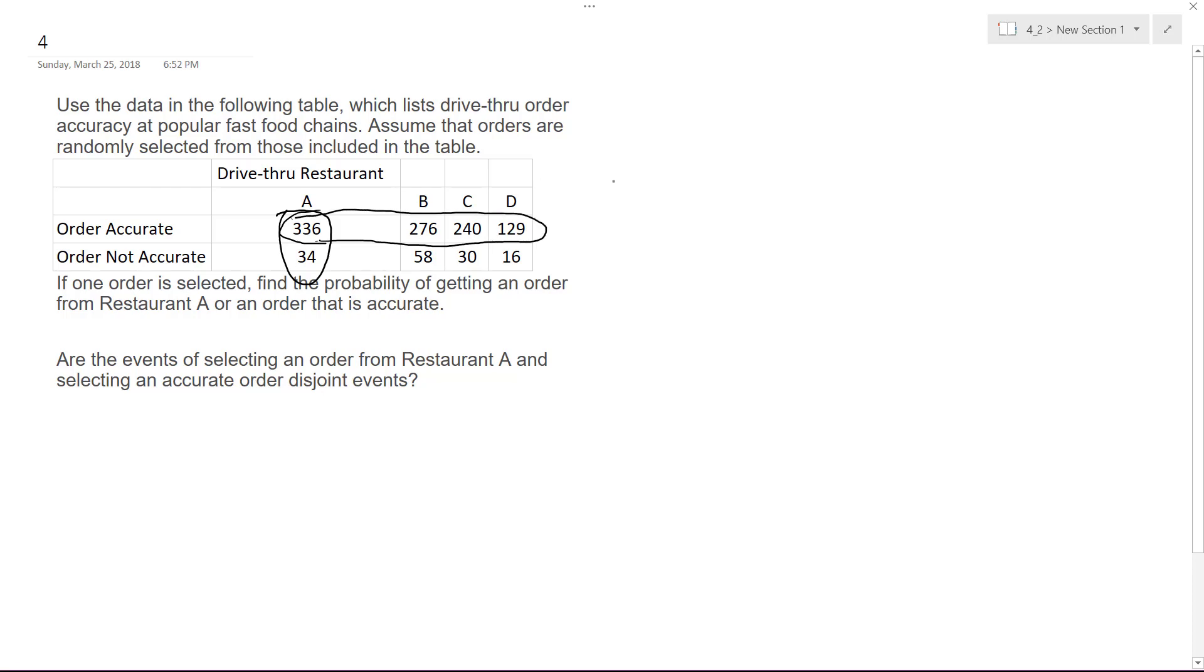So, we're going to have a numerator and a denominator. Our numerator is going to be 336 plus 276 plus 240 plus 129.